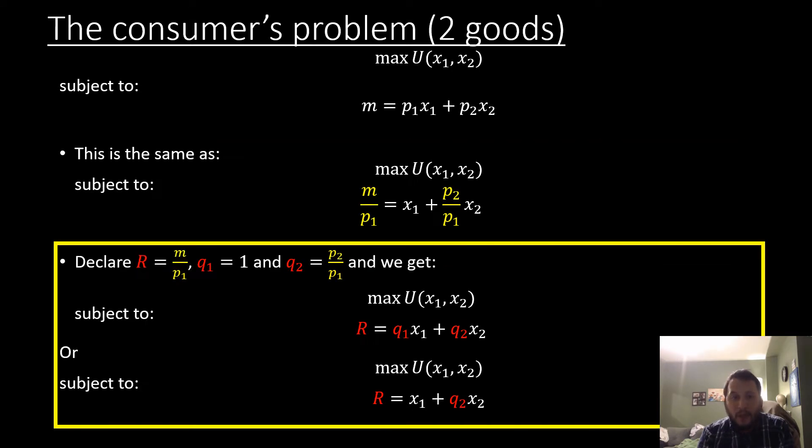Now we're going to be really cheeky here and we're going to declare these new variables: r which is going to be equal to m over p1, q1 which is going to be equal to one, and q2 which is equal to p2 over p1.